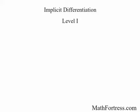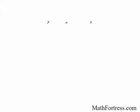Implicit differentiation, level 1. Recall that when we express functions using equations, we typically write them with the independent variable, usually x, and the dependent variable, usually y, separated by an equal sign, so that the dependent variable is explicitly expressed in terms of the independent variable. For example, the equation of a line in slope-intercept form expresses y explicitly as a function of x.